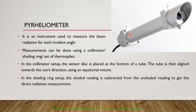In the shading ring setup, the shaded reading is subtracted from the unshaded reading to get the direct radiation measurement. In this setup, we have a sensor exposed to sunlight and a shading ring to get a shaded region. We will be able to get a total radiation reading and, using the shading ring, a diffuse radiation reading.